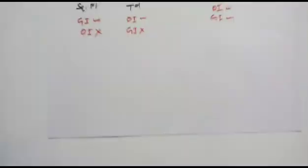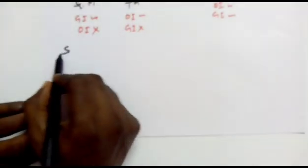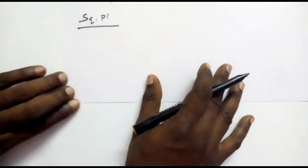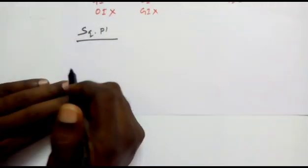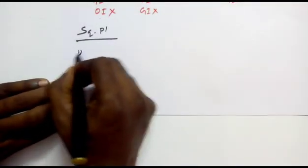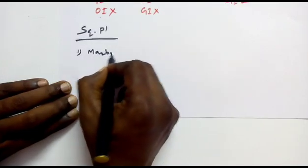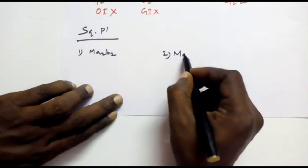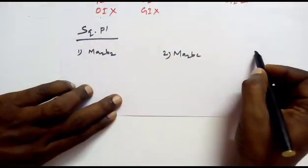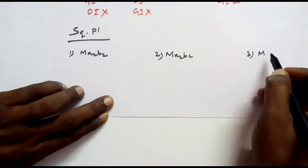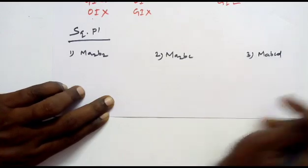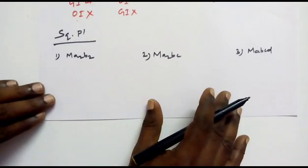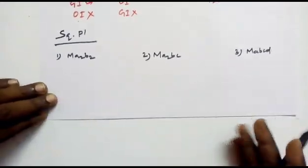Now let's begin with square planar complexes. They exhibit generally four types. The first one is MA₂B₂ type. The second is MA₂BC. The third is MABCD. And there is one more type with a bidentate ligand that we are going to see a little later. All are monodentate ligands for the first three types.